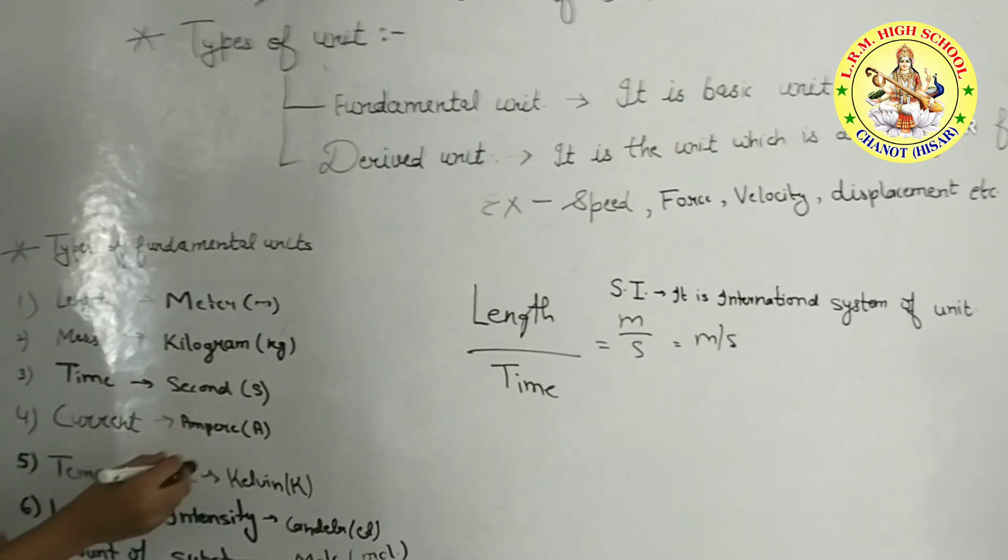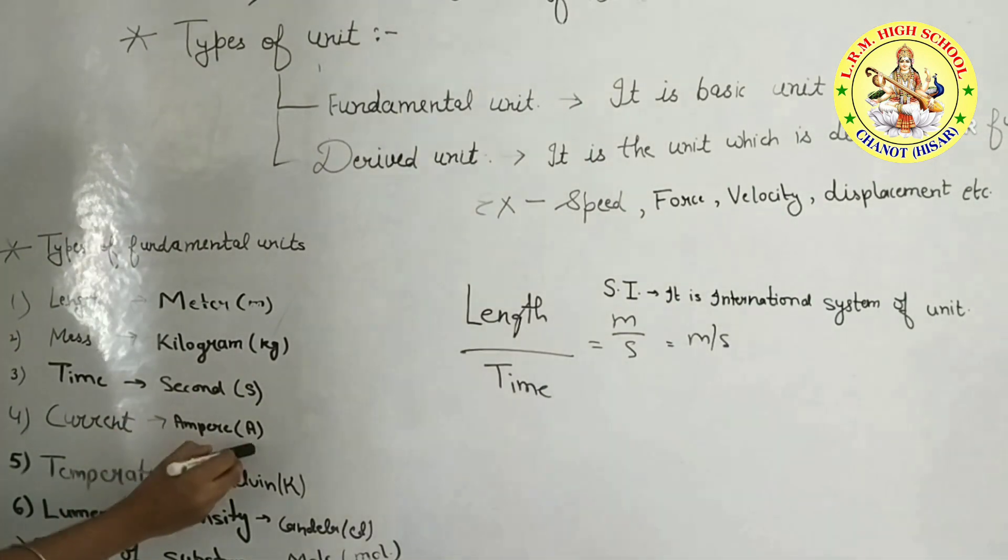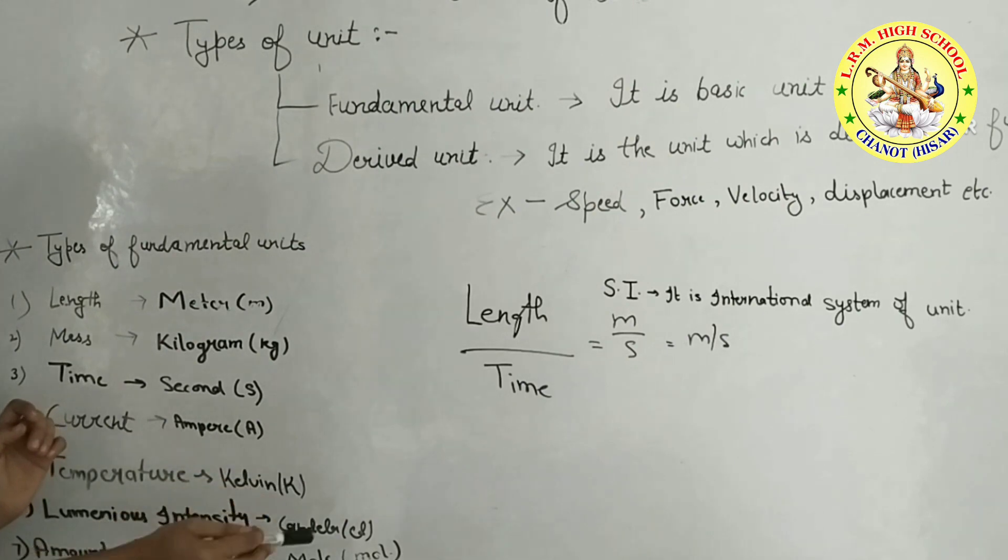Time of fundamental units, we use second. Current of fundamental units is ampere, which we denote A. Temperature of fundamental units is Kelvin, which we denote K.